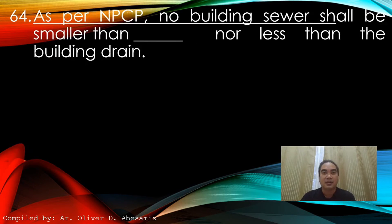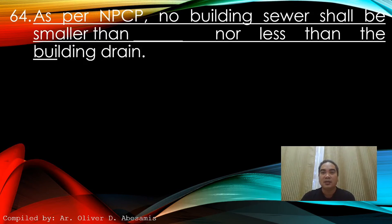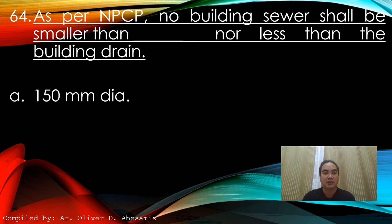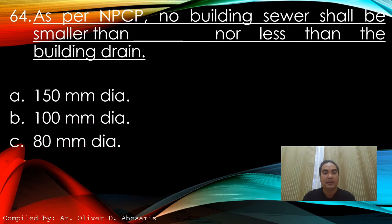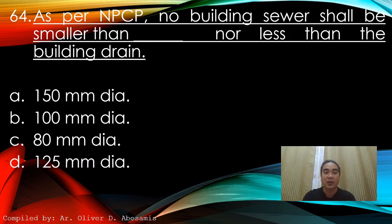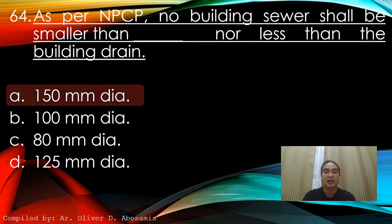As per NBCP, no building sewer shall be smaller than blank, nor less than the building drain. A. 150 mm in diameter. B. 100 mm in diameter. C. 80 mm in diameter. D. 125 mm in diameter. Answer: A. 150 mm diameter.